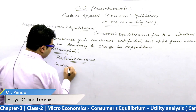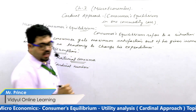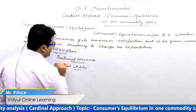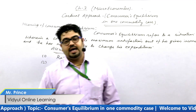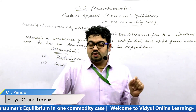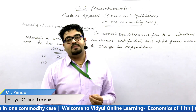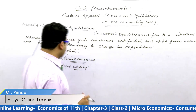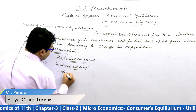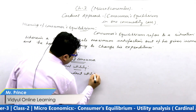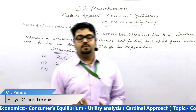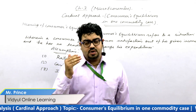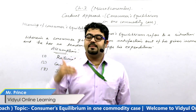The second assumption is cardinal utility, or cardinal numbers. Dr. Marshall had the concept that utility can be measured in the form of cardinal numbers like 1, 2, 3, etc. The third assumption is independent utility. It is assumed here that each and every commodity provides a separate utility to a consumer, and each commodity has its own utility which cannot be compared with others.